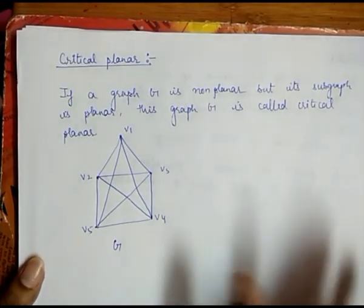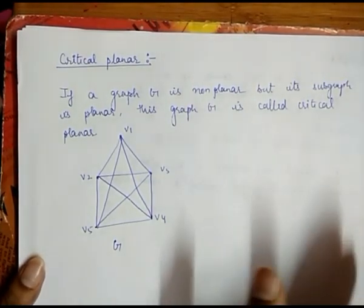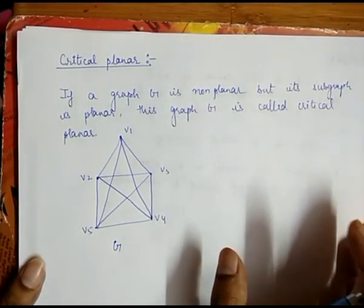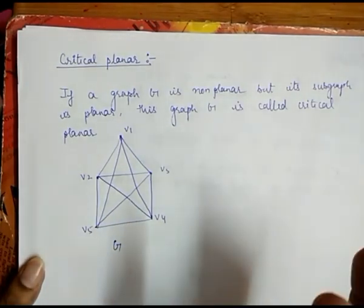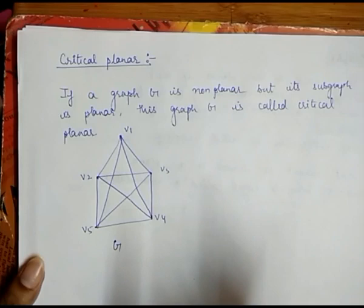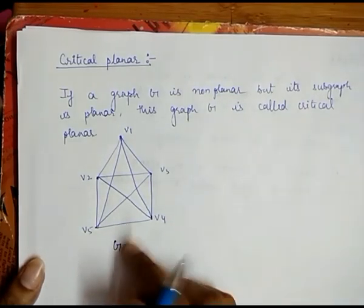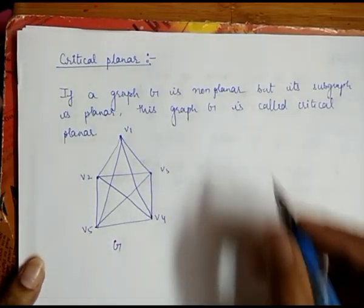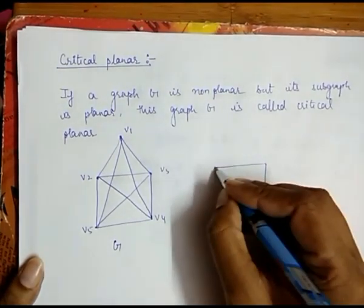Now I take a subgraph. The property of a subgraph is that it contains some of the vertices and some of the edges of graph G. If the vertices and edges are present in graph G, then it is called a subgraph.